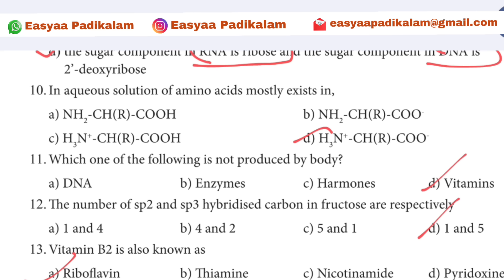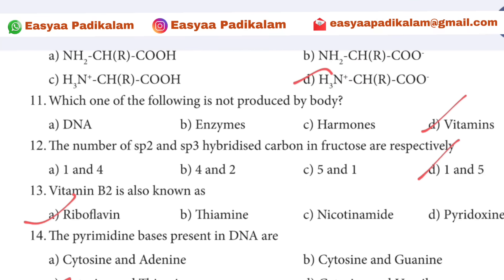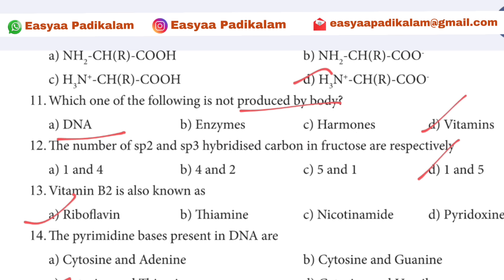11th question: Which one of the following is not produced by the body? DNA, enzymes, and hormones are secreted in the body — so we need vitamins, as vitamins must be obtained externally.